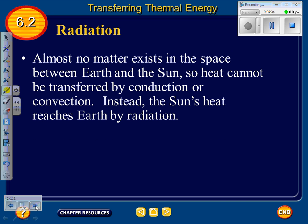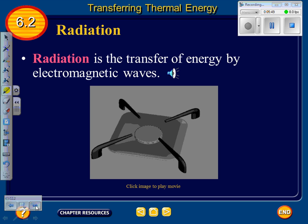Radiation: almost no matter exists in the space between Earth and the sun, so heat cannot be transferred by conduction or convection. Instead, the sun's heat reaches Earth by radiation. Radiation is the transfer of energy by electromagnetic waves.